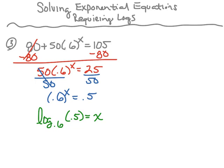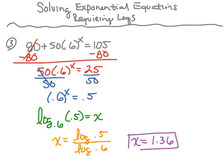Now that I have that log, I'm going to use the change of base property, which says that x is going to equal the log of 0.5 divided by the log of 0.6. Entering this into my calculator, I get a value of 1.36. Once again, I am rounding to two decimal places. So x is equal to 1.36.